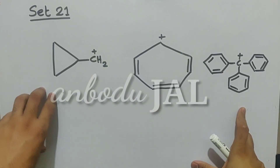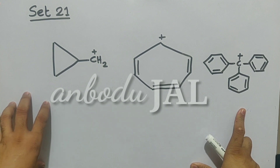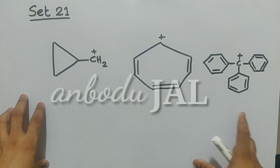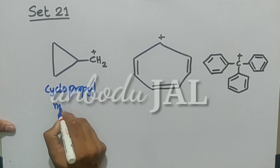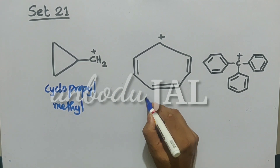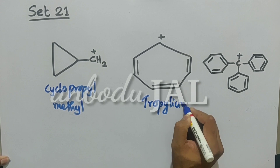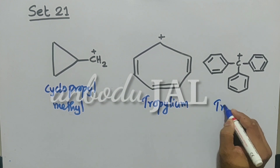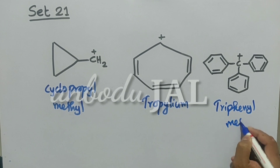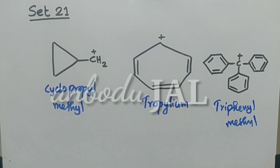For additional information: the cyclopropylmethyl carbocation and the tropylium carbocation or tropylium ion are being discussed. Among these three structures, the cyclopropylmethyl carbocation is more stable due to dancing resonance, sigma resonance, or bent orbital overlap.